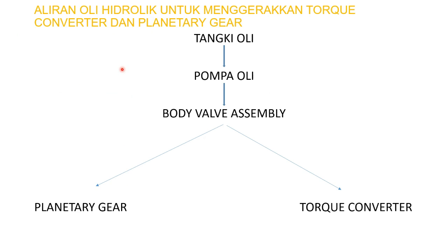Ini adalah skema aliran hidrolik untuk menggerakkan torque converter pada transmisi otomatis. Yang pertama di sini adalah dari tangki oli, kemudian menuju ke pompa oli. Dari pompa oli kemudian menuju ke body valve. Dari body valve nanti adalah menuju ke torque converter dan menuju ke planetary gear. Ini adalah aliran oli yang dialirkan dari mulai tangki sampai ke torque converter atau ke planetary gear.